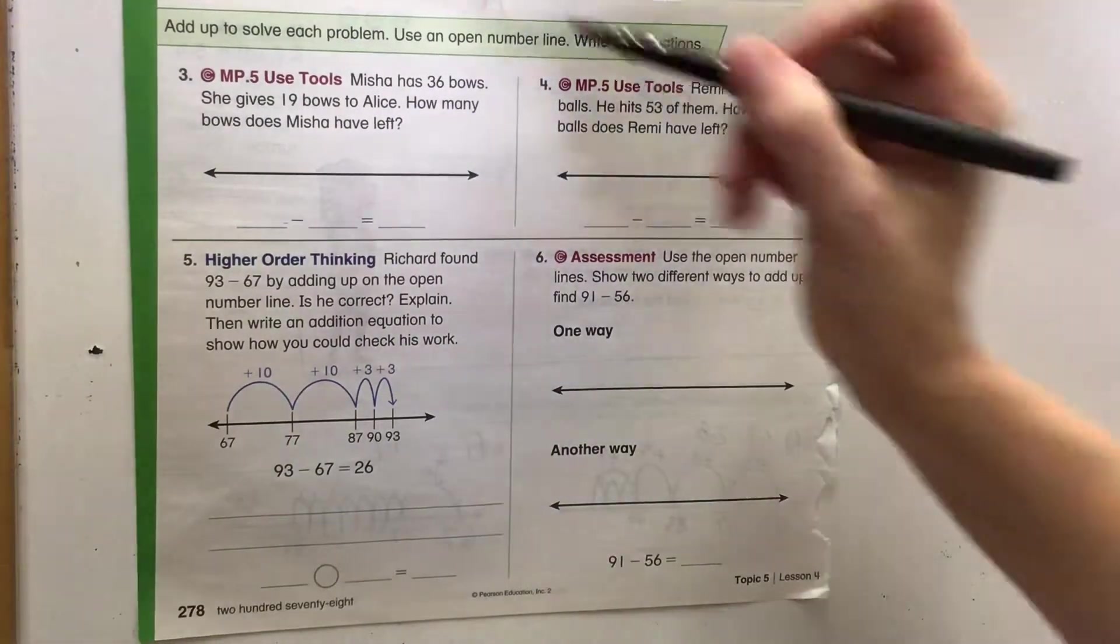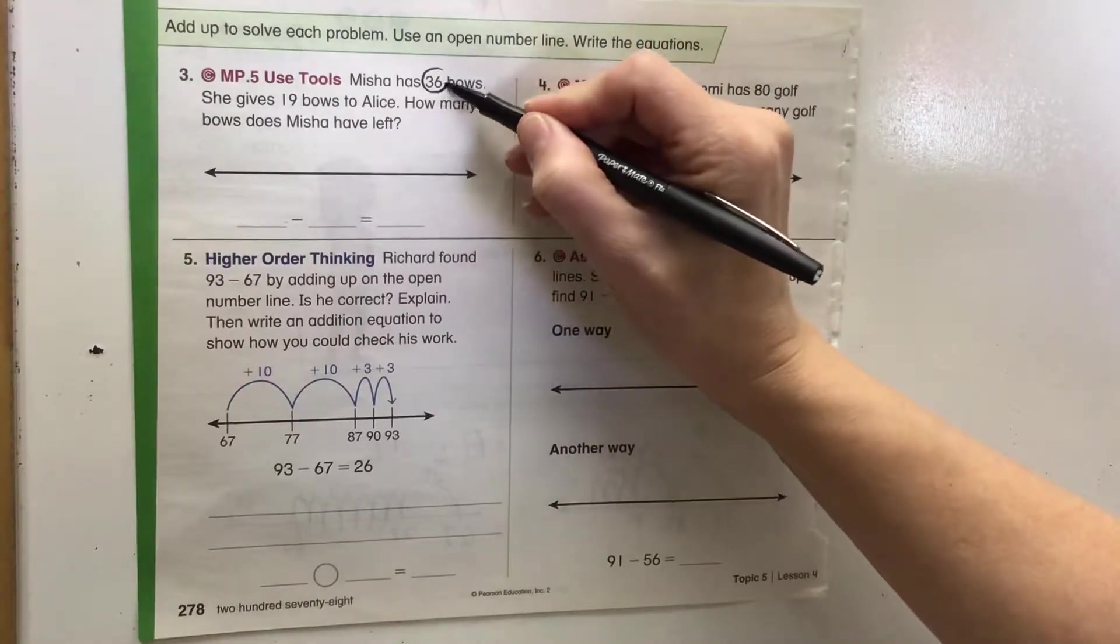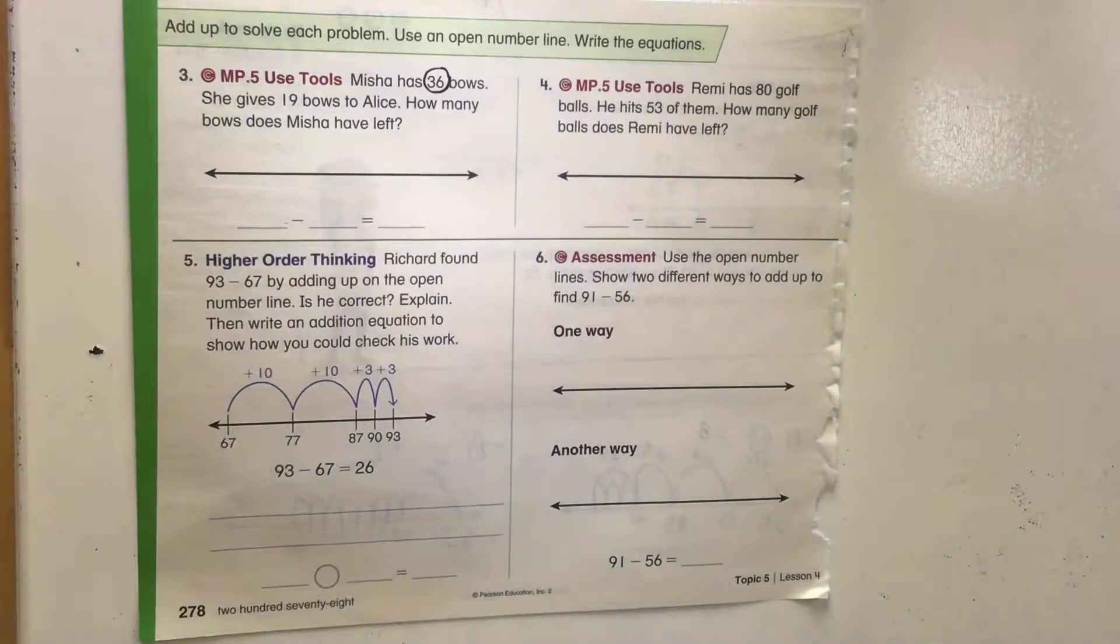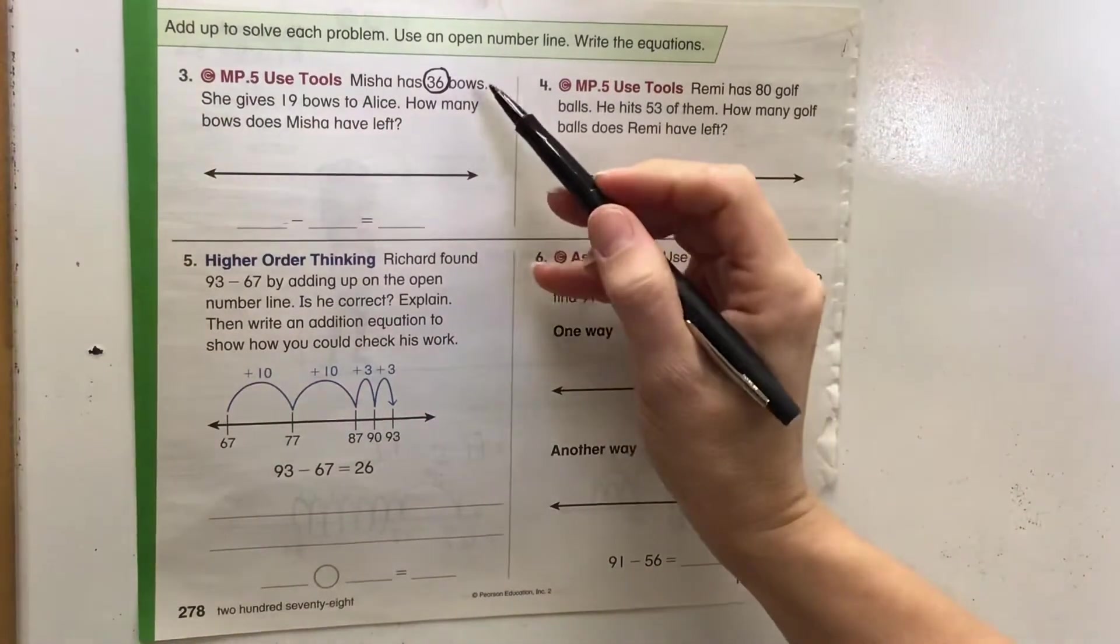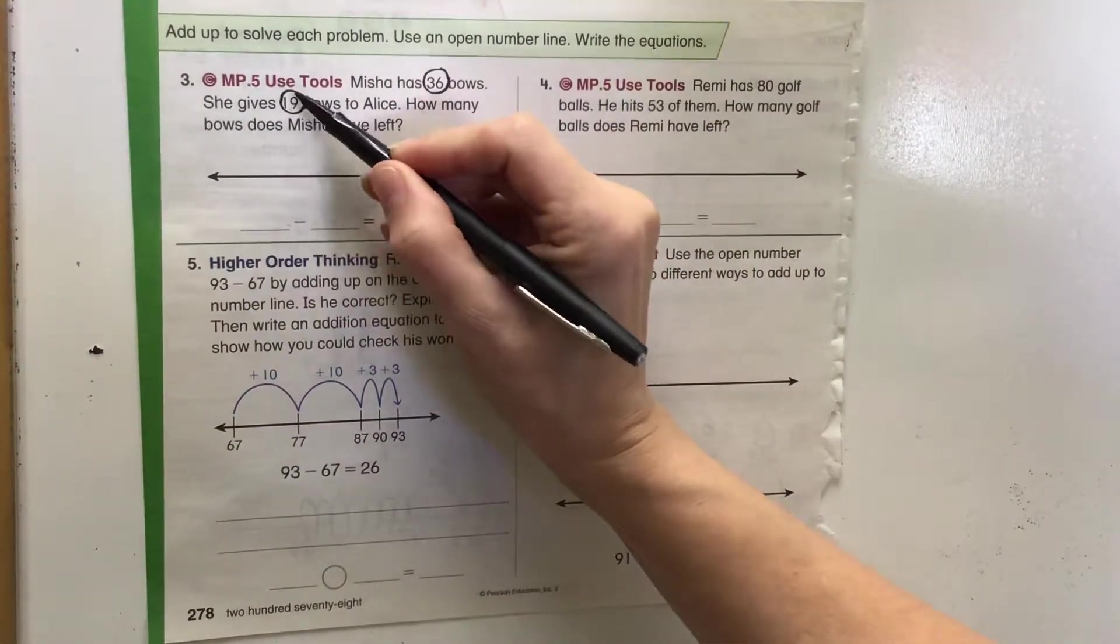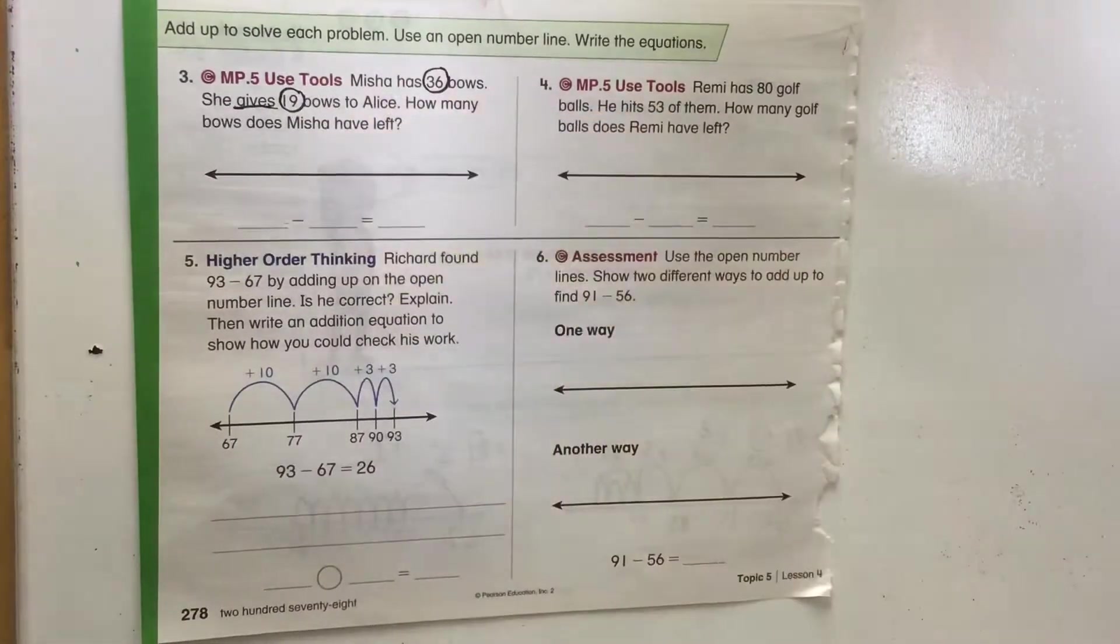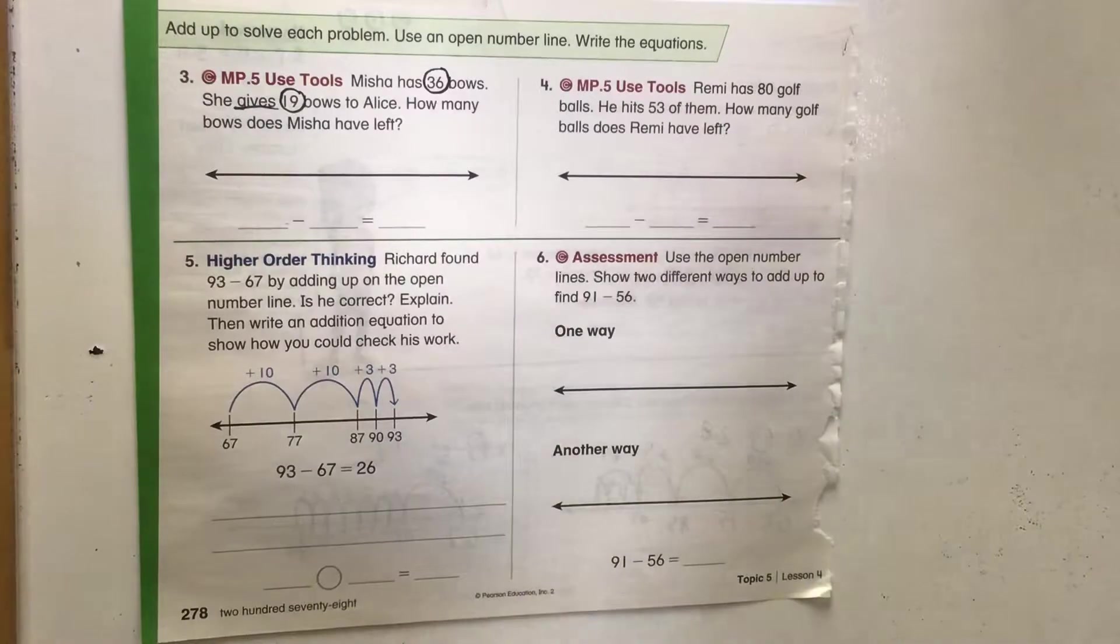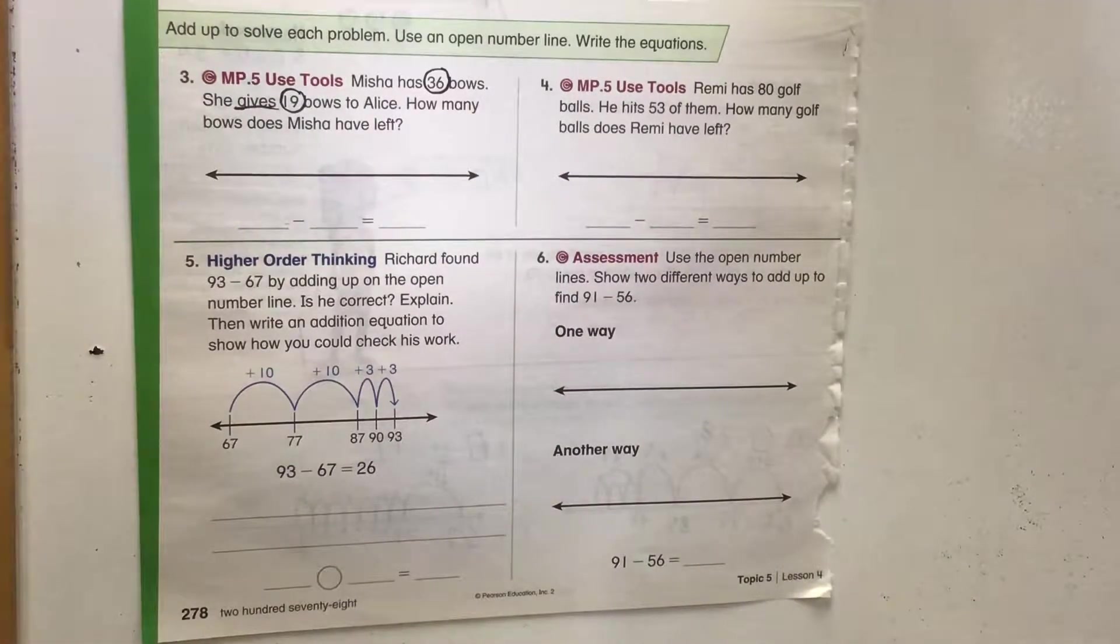Misha has 36 bows. Whenever there's word problems, it's really good to go through and circle the numbers and try to figure out what it's asking us. She has 36 bows, she gives 19 bows to Alice. Gives lets us know we're going to subtract. How many bows does she have left? We are going to try and add up on this one.